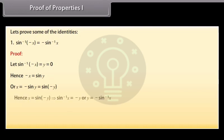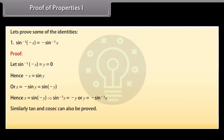Proof of Properties: Let's prove sin⁻¹(-x) = -sin⁻¹ x. Let sin⁻¹(-x) = y. Hence -x = sin y, or x = -sin y = sin(-y). Hence x = sin(-y), which implies sin⁻¹ x = -y, or y = -sin⁻¹ x. Similarly, the analogous results for tan and cosec can also be proved.